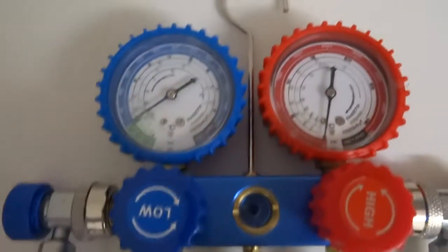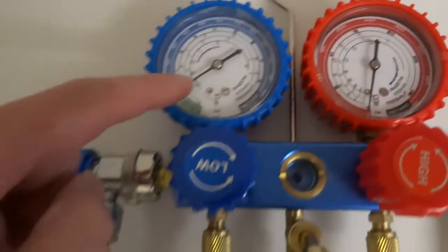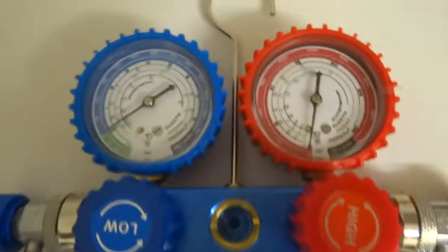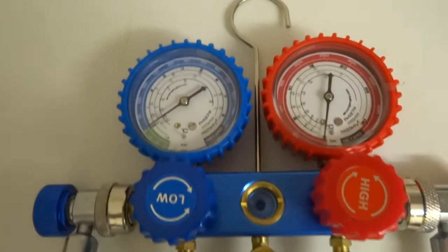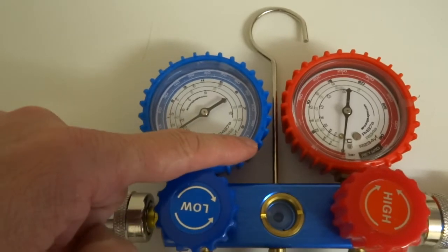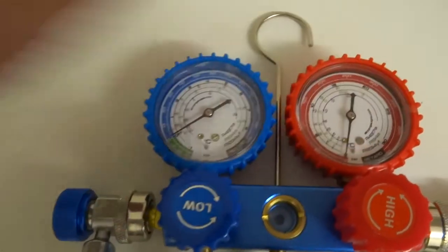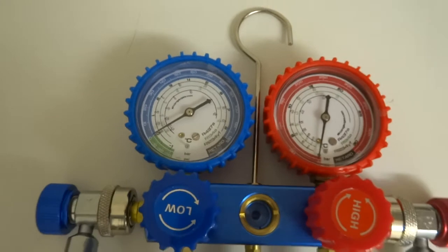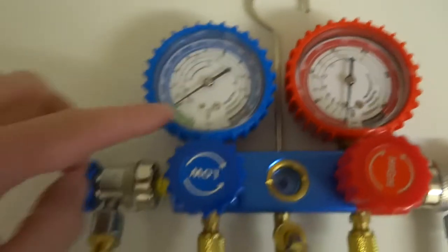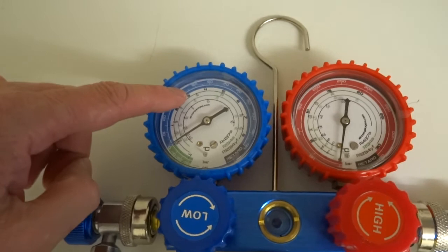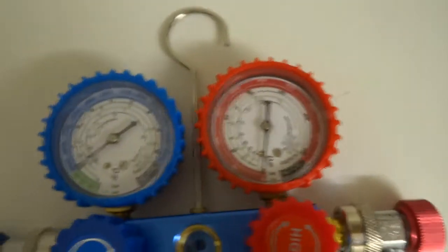So basically the gauges, you have a pressure reading on the outside. This is the low side, high side. This one goes up to 120 psi. This one goes up to 450. Basically a good reading would be about 35 to 40 and about 200 on this side.